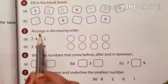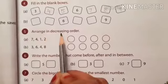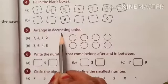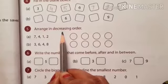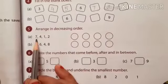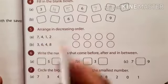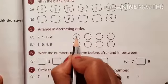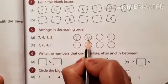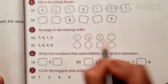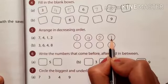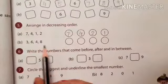Number 5. Arrange in decreasing order. Decreasing order means biggest first and smallest last. First number 7, 4, 1, 2. Biggest number is 7. Then 4, then 2 and smallest number is 1. You will do next sum.